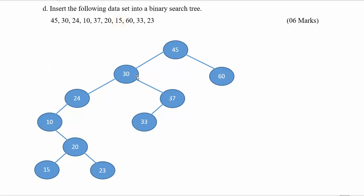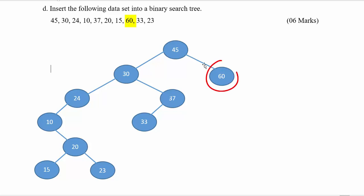The next number is 15 — it is less than 45 (left), less than 30 (left), less than 24 (left), greater than 10 (right), and less than 20, so it goes to the left of 20. Number 60 is greater than 45, so you can directly mark it on the right-hand side of the root.